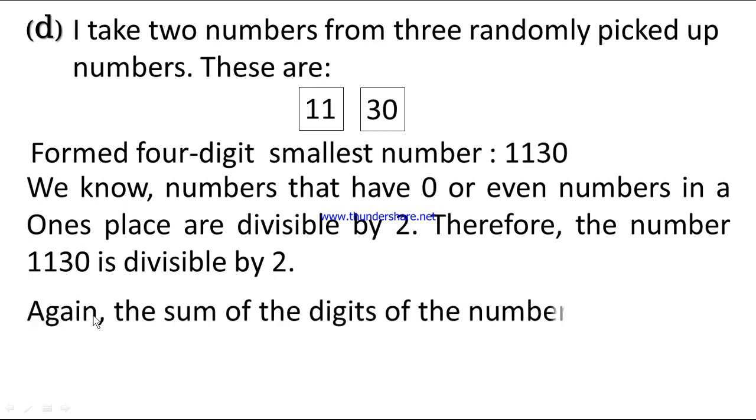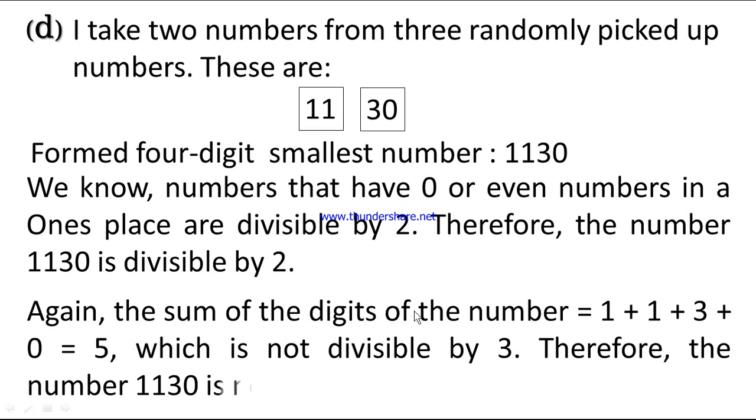Again, the sum of the digits of the number is equal to 1 plus 1 plus 3 plus 0 equals 5, which is not divisible by 3. Therefore, the number 1130 is not divisible by 3.